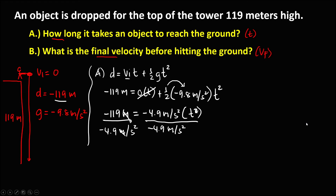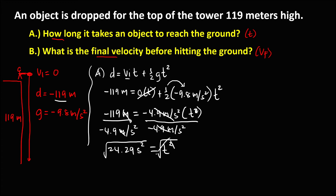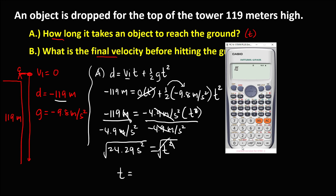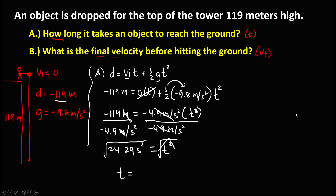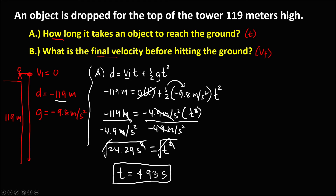So we have 24.29 seconds squared equals t squared. To solve for time, take the square root of both sides. The square root of 24.29 gives us the time equal to 4.93 seconds.